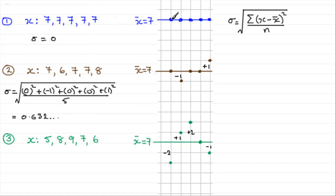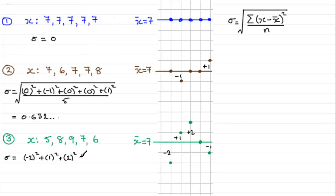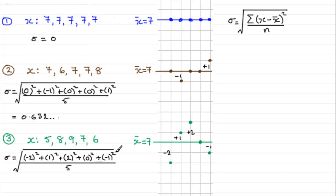We'd expect a bigger sigma for the third dataset. The squared deviations are: minus two squared, plus one squared, plus two squared, zero squared, and minus one squared. Dividing by five and taking the square root gives the square root of two, which equals approximately 1.414. This is clearly a bigger measure of scattering than the 0.632 we had before.